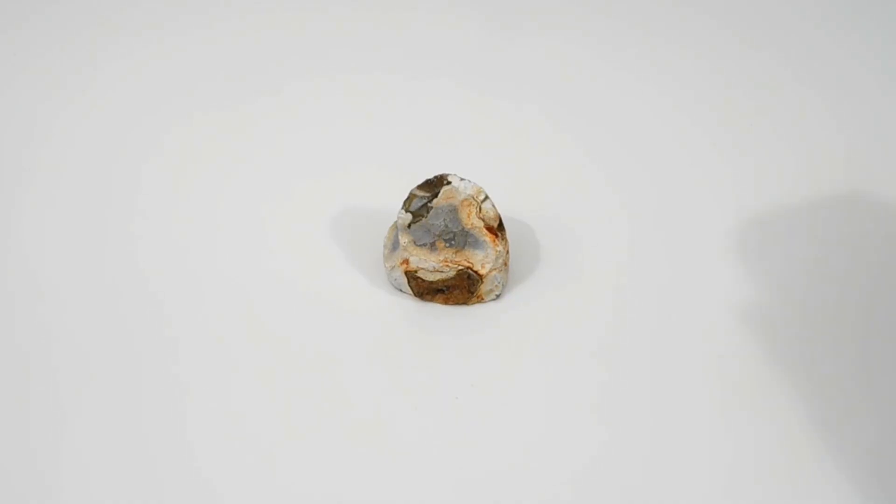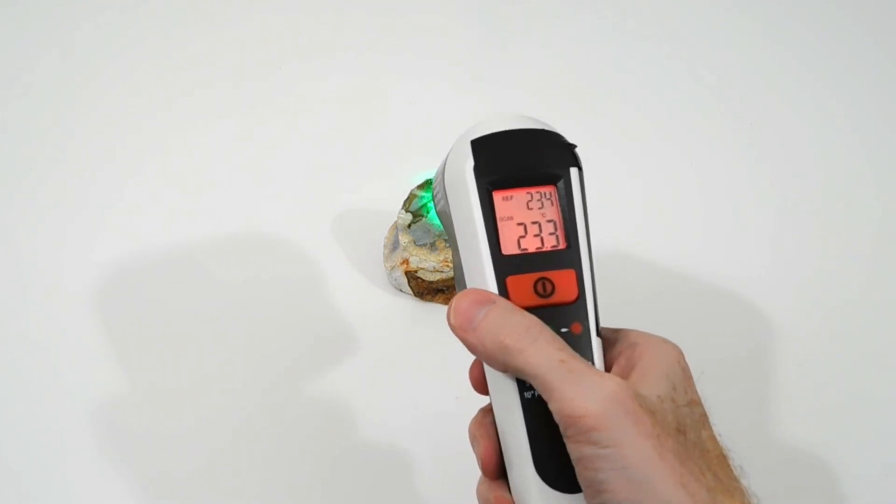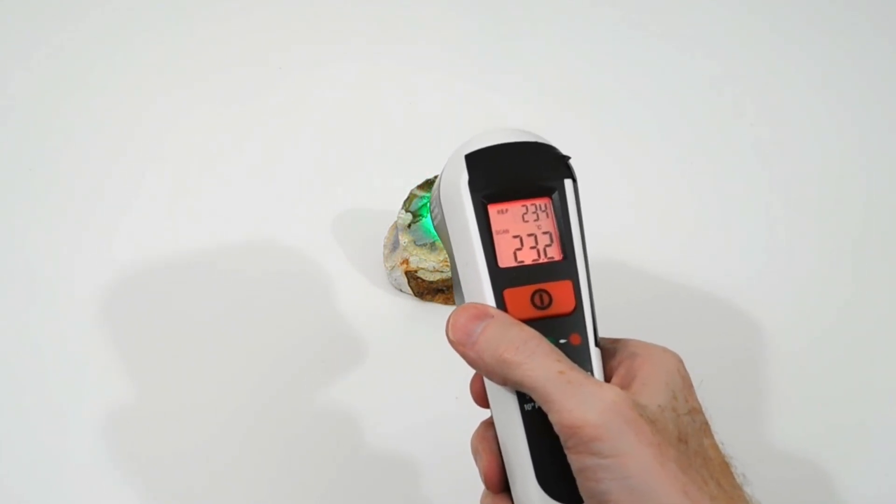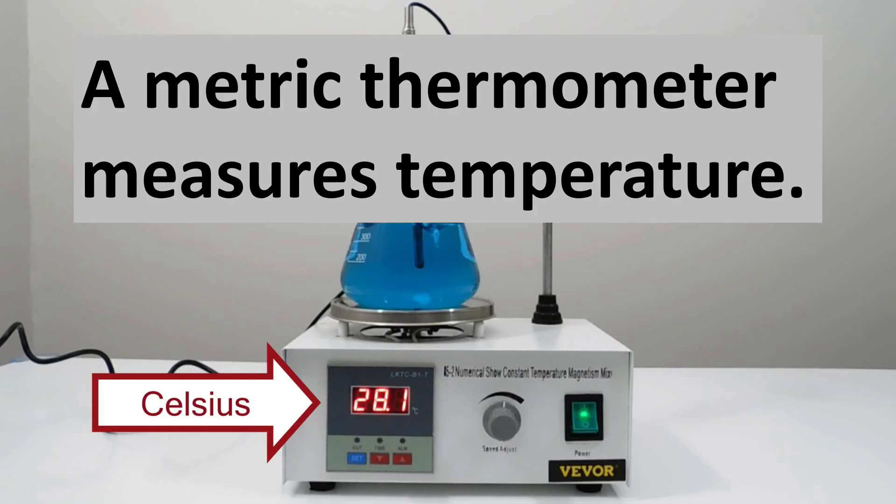If we were geologists at a dig site and had just discovered a rock like this, we might want to know its temperature. So we would use a touchless thermometer like this one. To summarize this scientific instrument, a thermometer measures temperature.